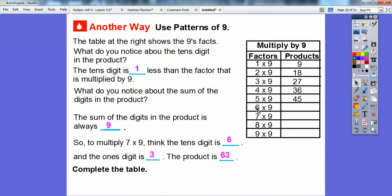Well, we talked about this one. So one less than six is five, and five plus four equals nine. So this one's going to be 54. So when we multiply by seven, well, we have it right here. But one less than seven is six. So six plus three is nine, 63.